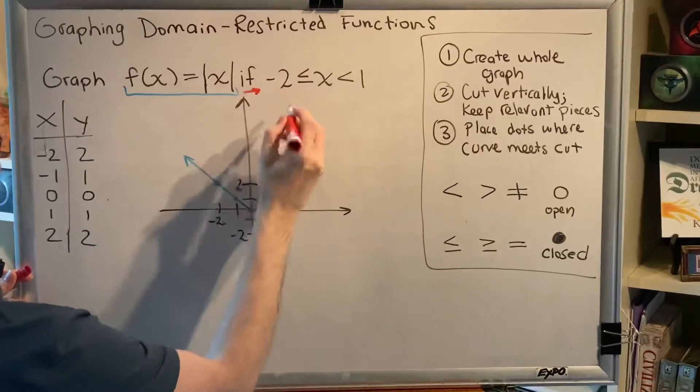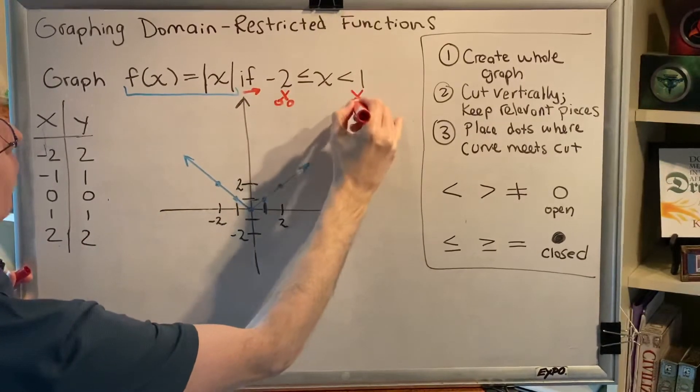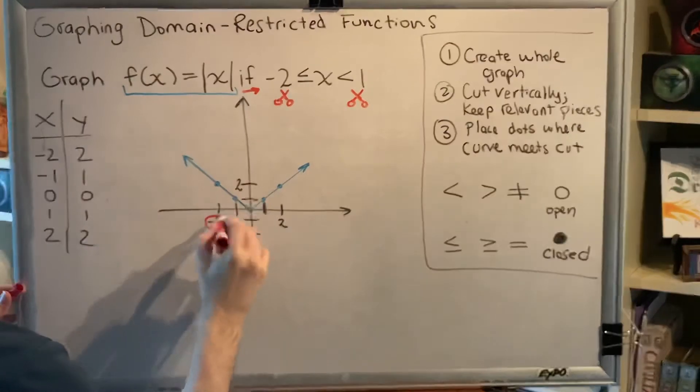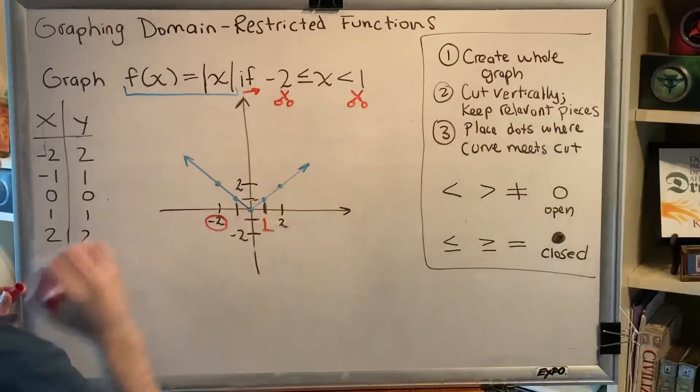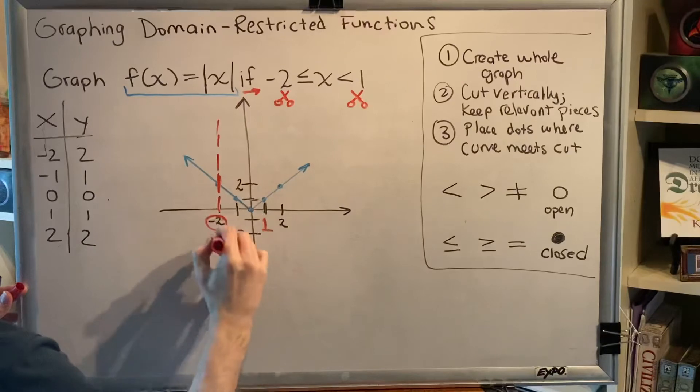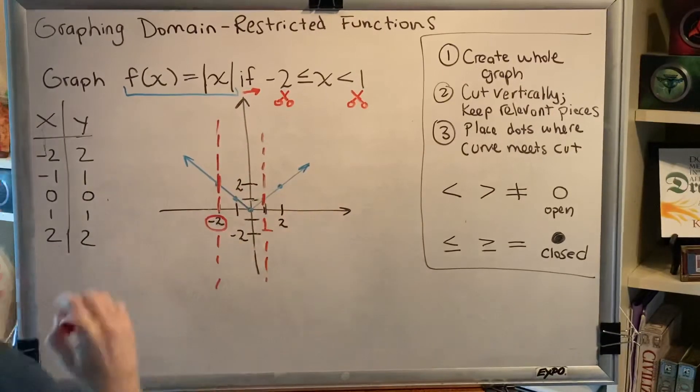So after the word if, find the numbers. And the numbers are where you're going to make a vertical cut. So we're going to cut at negative 2 and positive 1. And we're going to cut vertically. So right through that point, and vertical. Right through that point, and vertical.